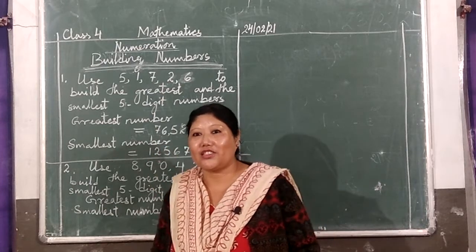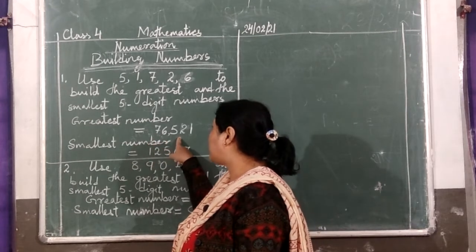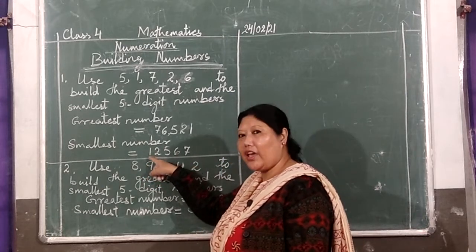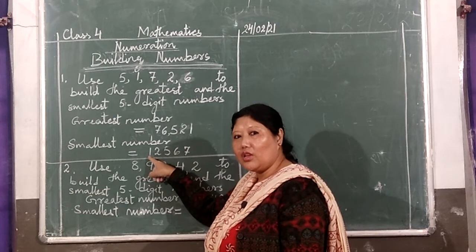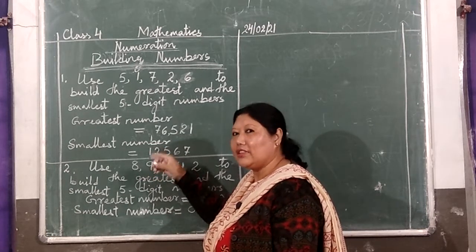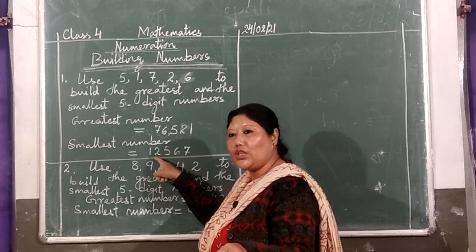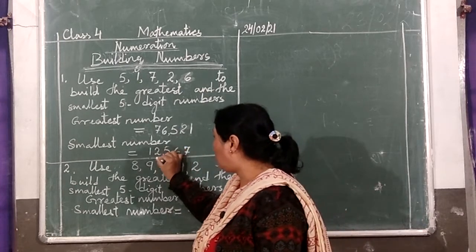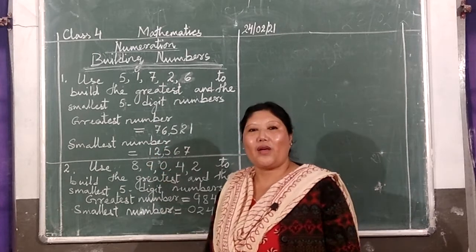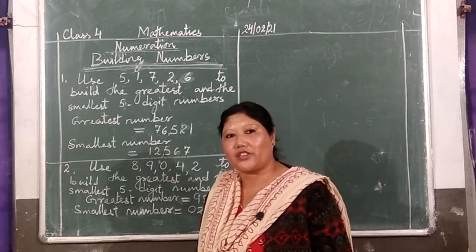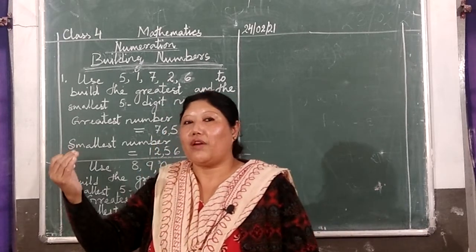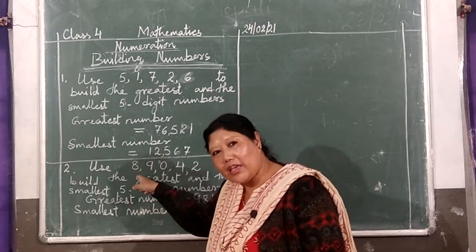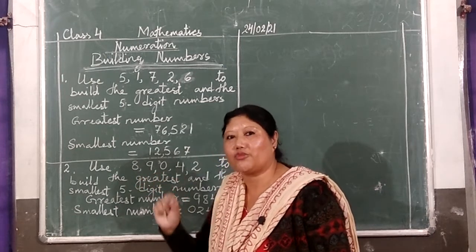Now smallest. Smallest is just opposite — it was in descending order, now it will be in ascending order. Start from smallest: 1 is smallest. Next higher: 2, then 5, then 6, then 7. According to Indian place value, it becomes 12,567. So the method is: if you have to make the greatest number, write in descending order. If you are making the smallest, write in ascending order, smallest to biggest.